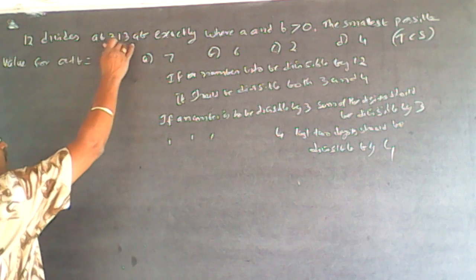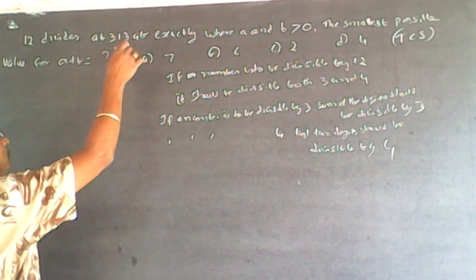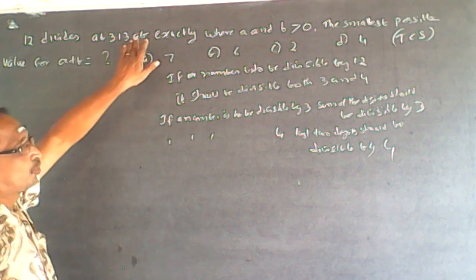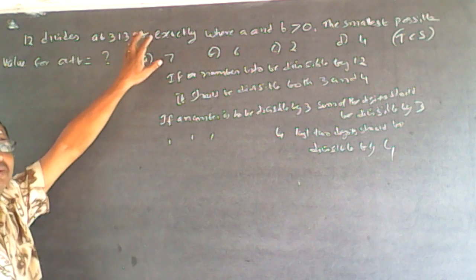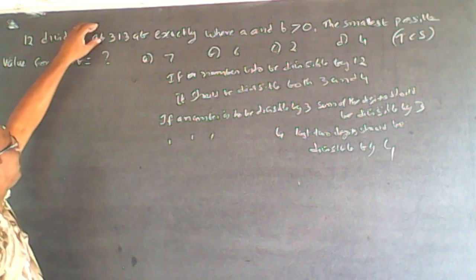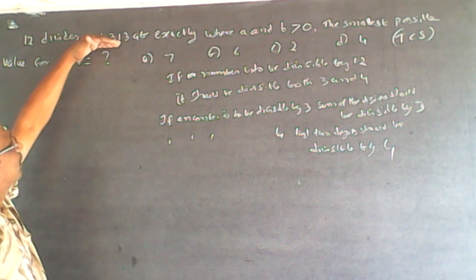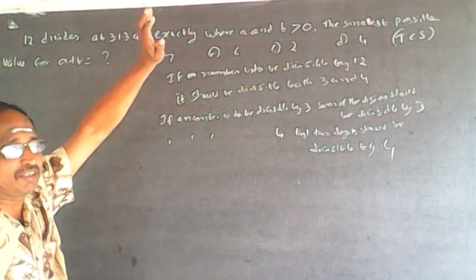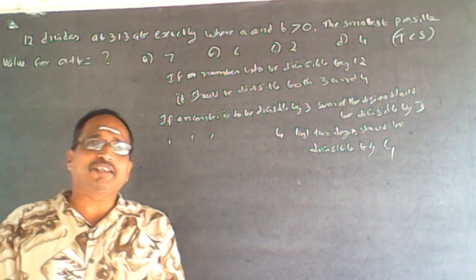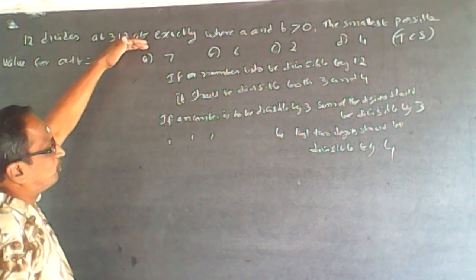Already 7 is there in the number. So 2 times (A plus B) should be added such that 2(A+B) plus 7 is divisible by 3. And the last two digits AB should be divisible by 4.